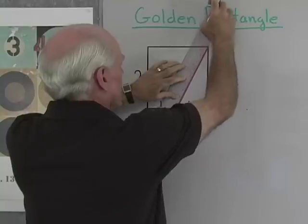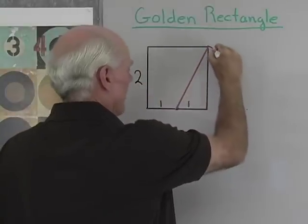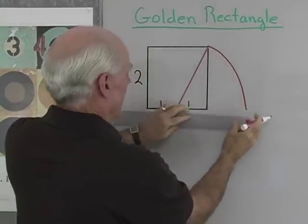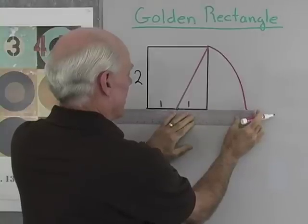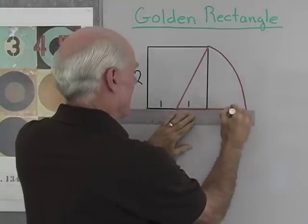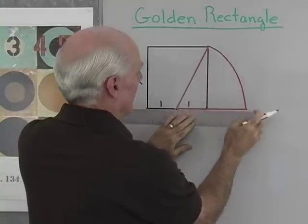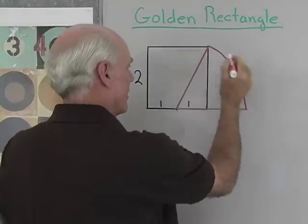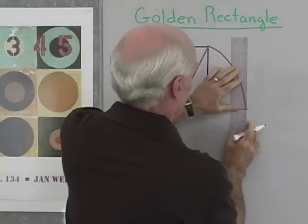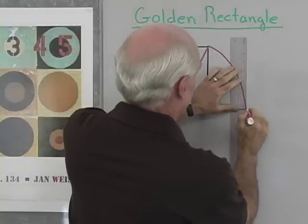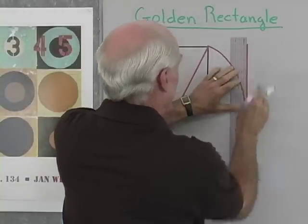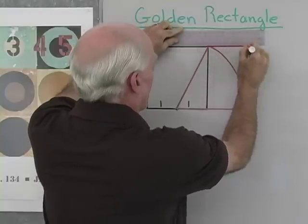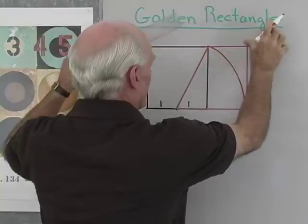And then what I want to do is drop that length down and extend this side right here to meet that. Now when I do that, the rectangle that I get is called the golden rectangle. There's my golden rectangle.